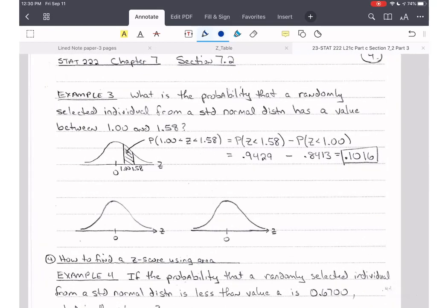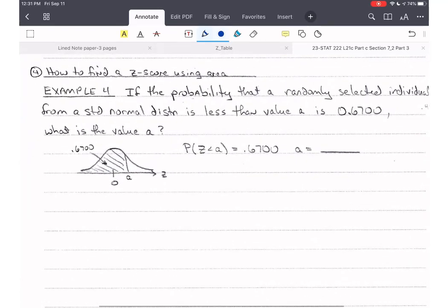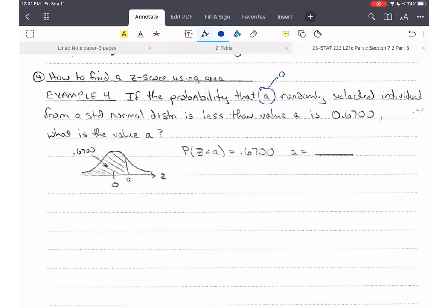So for example three here, we're doing example four. Sorry. We did example three last time, didn't we? So now we're how to find a z-score when we're using area. So if the probability that a randomly selected individual from a standard normal distribution or population is less than some value a, if that probability is 0.6700, these are always awkward to write, what is the value of a? So what is a here?